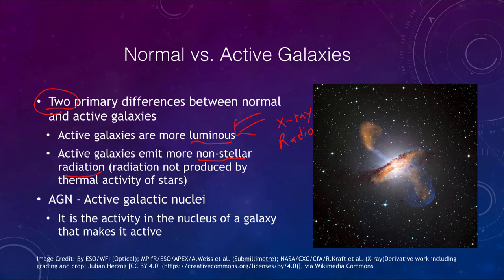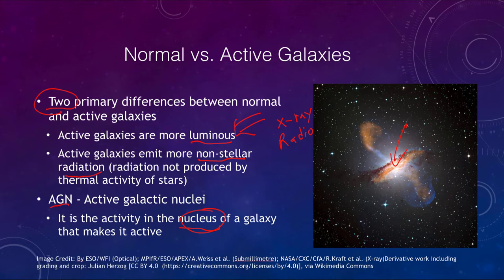Active galaxies also emit what we call non-stellar radiation — radiation not produced by the thermal activity of stars. For an ordinary galaxy, its spectrum is essentially the combined spectrum of all its stars. For active galaxies, the overall spectrum looks much different. We also use the term AGN, or active galactic nuclei, to refer to activity in the nucleus of the galaxy, near the supermassive black hole at its center, which is what causes a galaxy to become active.